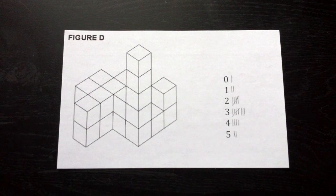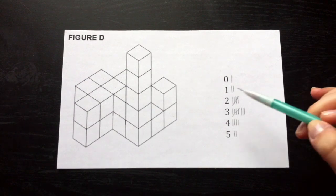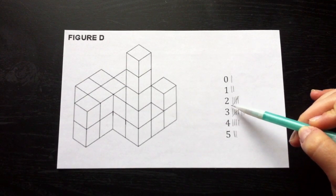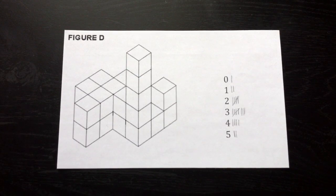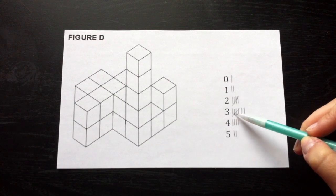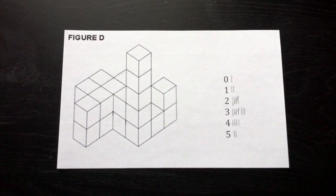Finally, we can answer the questions. How many cubes have two of their exposed sides painted? 1, 2, 3, 4, 5 cubes — the answer is D. How many cubes have three of their exposed sides painted? 1, 2, 3, 4, 5, 6, 7, 8 cubes — the answer is C.